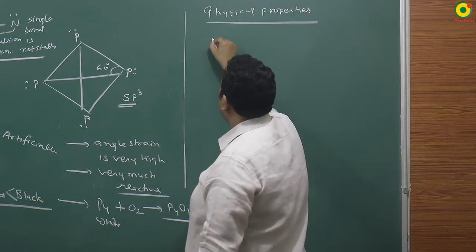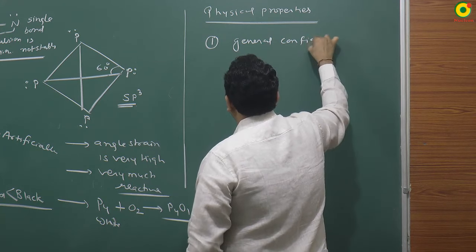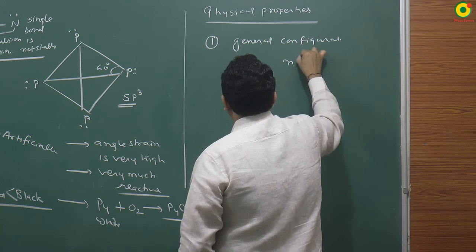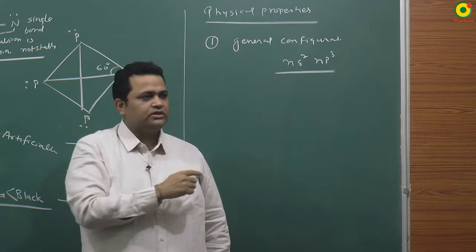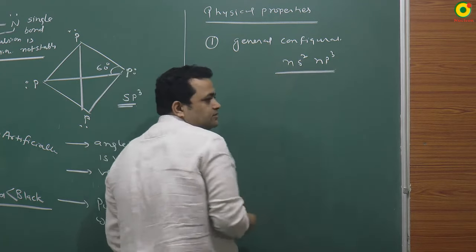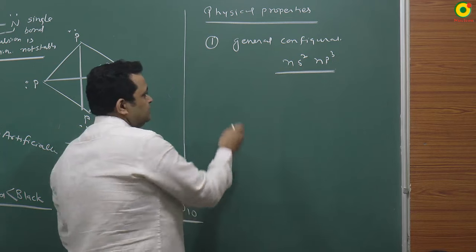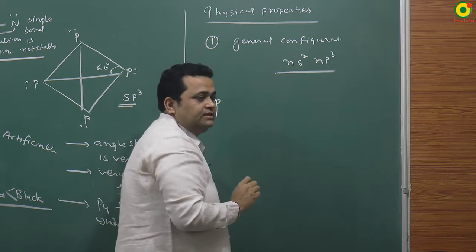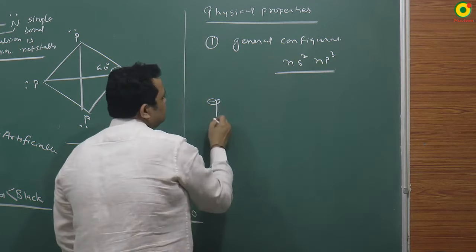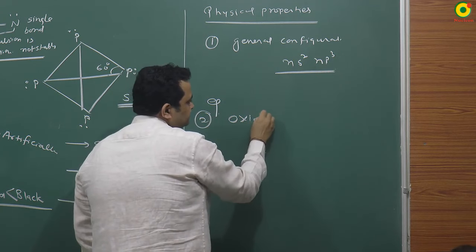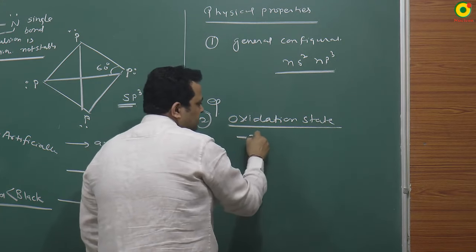Moving to physical properties: the general electronic configuration of Group 15 elements is ns², np³. The outermost shell has five electrons, so the maximum number of bonds they can form is 5. The oxidation state varies from -3 to +5.